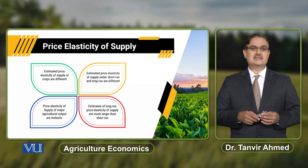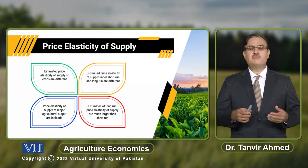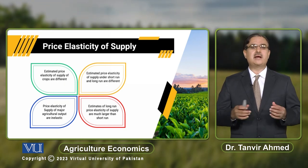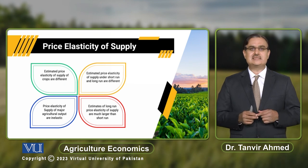One thing we can observe here is that estimated price elasticity of supply of different crops will be different. It might be possible that for some crop, price elasticity of supply is elastic, or it might be inelastic, or it might be unit elastic. Estimated price elasticity of supply will also be different under short run and long run. Under short run, price elasticity of supply is usually less than in the long run. For major agricultural outputs or major agricultural crops, their price elasticity of supply is inelastic as compared to crops that are not major crops.